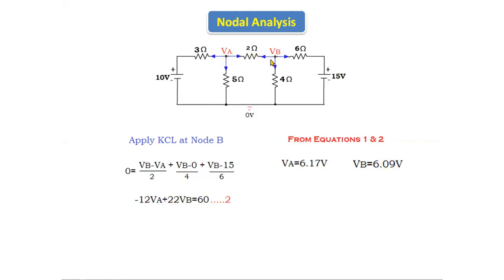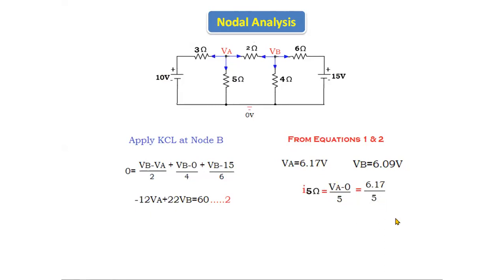After finding these node voltages, we can find the current through each resistor. The question asks for the current through the 5 ohm resistor. The formula is: current = (VA − 0)/5. Substituting VA = 6.17 volts: current = 6.17/5 = 1.23 amperes. That is the current passing through the 5 ohm resistor.